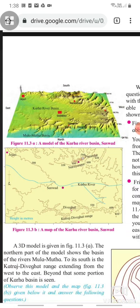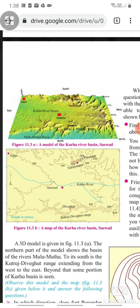There are two models: 11.3a, which is a model of the Karha river basin in Saswad, and 11.3b is a map of Karha river basin in Saswad.